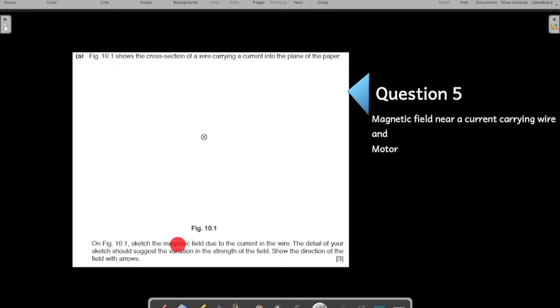So on this figure sketch, the magnetic field due to the current in the wire, you have to draw the magnetic field pattern in this whole empty space which is given to you. You have to draw the magnetic field line in this space. The details of your sketch should suggest the variation and the strength of the field.